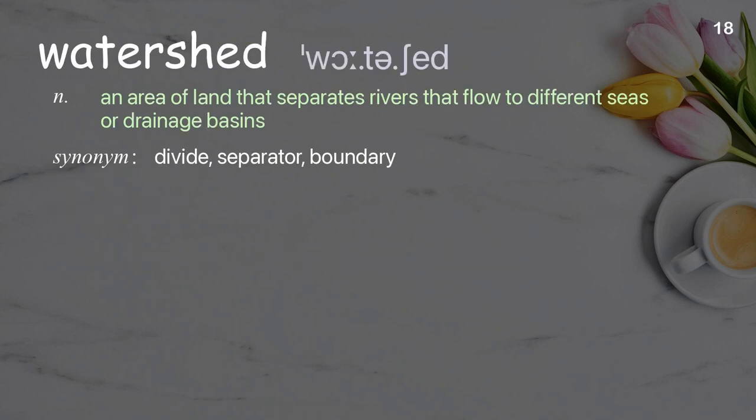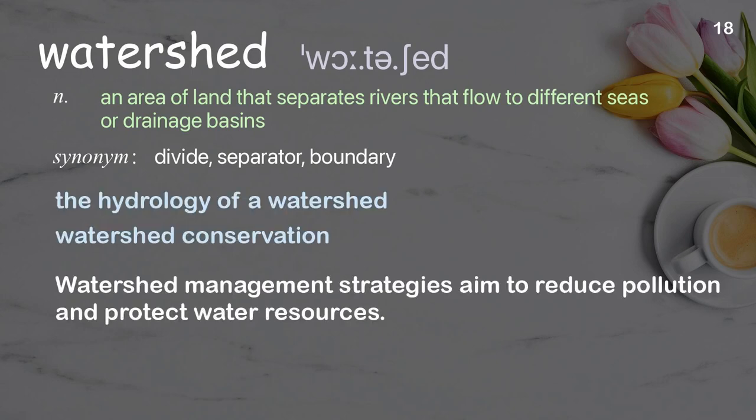Watershed: an area of land that separates rivers that flow to different seas or drainage basins. Examples: the hydrology of a watershed, watershed conservation. Watershed management strategies aim to reduce pollution and protect water resources.